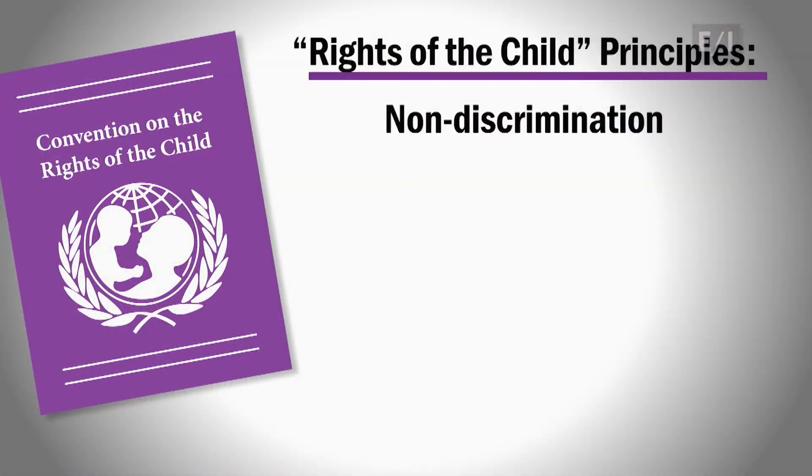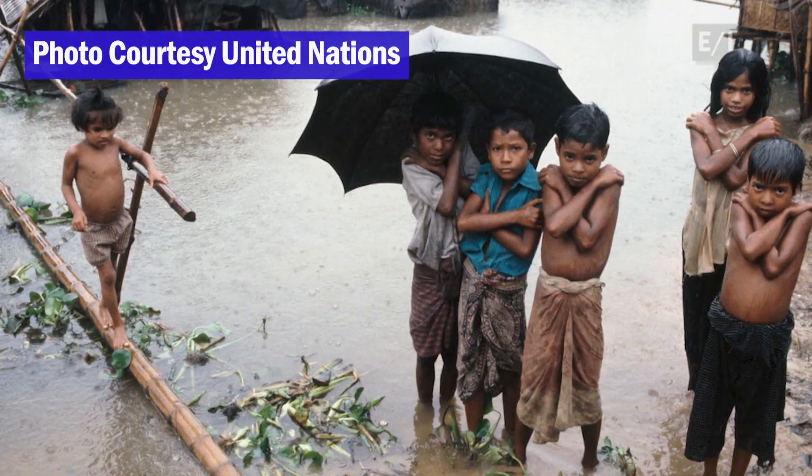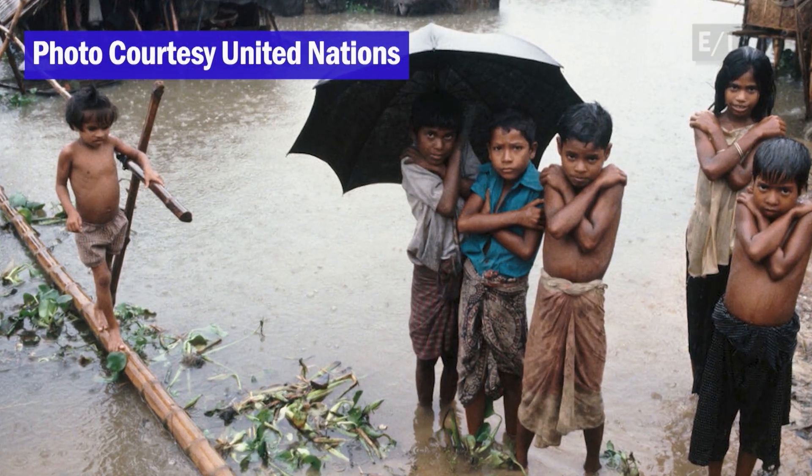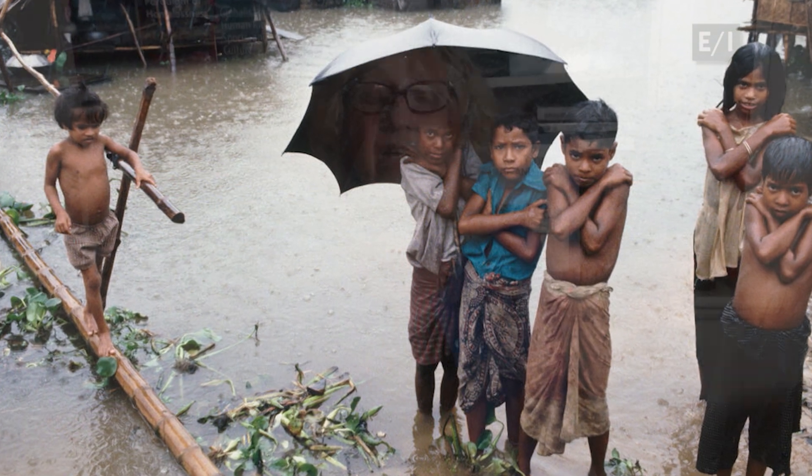But let's briefly review the four basic principles. The first is non-discrimination. What kinds of discrimination do kids face? Young people face discrimination on a regular basis — it could be on their gender, race, or religion. Children have the highest rates of poverty, hunger, and homelessness. So there's a lot of discrimination that occurs.